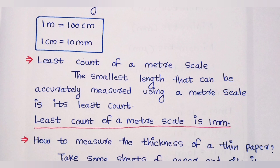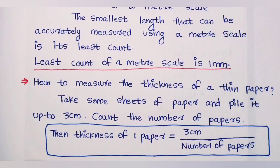If you want to do a class assignment, please do. If you want to try to do the class, you will need to work out. First, we will need to do the least count of 5 meters. How to measure the thickness of a thin paper — take some sheets of paper and pile it up to 3cm.